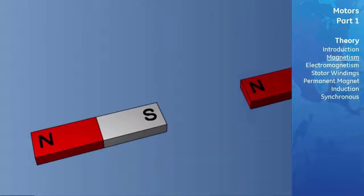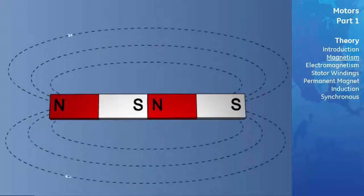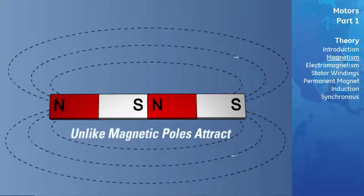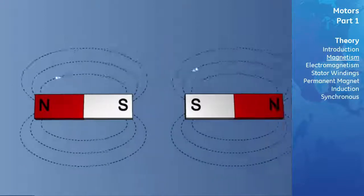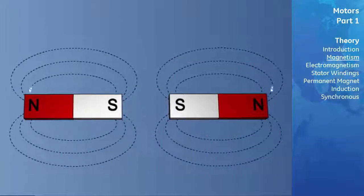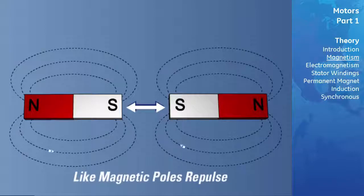When the unlike poles of two magnets are brought together, their lines of flux combine and tend to pull or attract the two magnets together. We can conclude that unlike magnetic poles attract one another. Conversely, when the poles of the same polarity are brought together, the lines of flux produce a force that tends to repel the magnets apart. We can then say that like magnetic poles repulse one another.